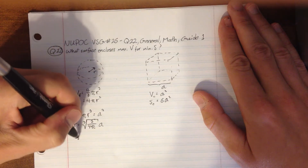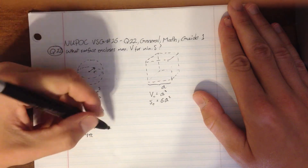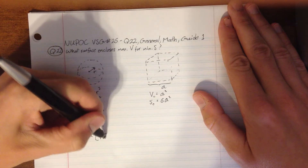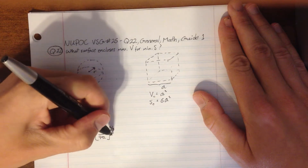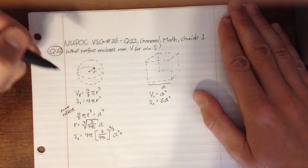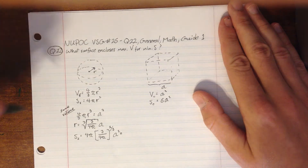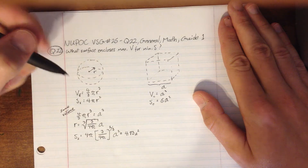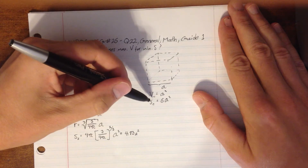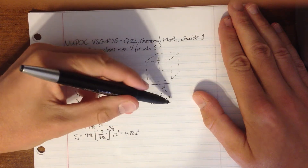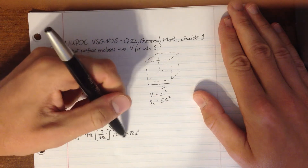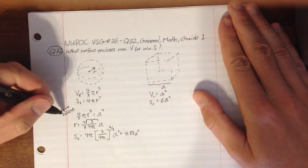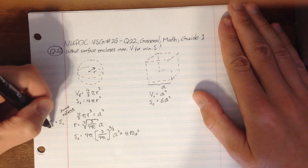Now let's substitute that r into our surface area equation for the sphere. The surface area of the sphere equals 4π times r², which becomes (3 over 4π) to the 2/3 times a², which works out to about 4.83 a². The surface area of the cube is 6a², so given the same volume, the sphere has less surface area than the cube.